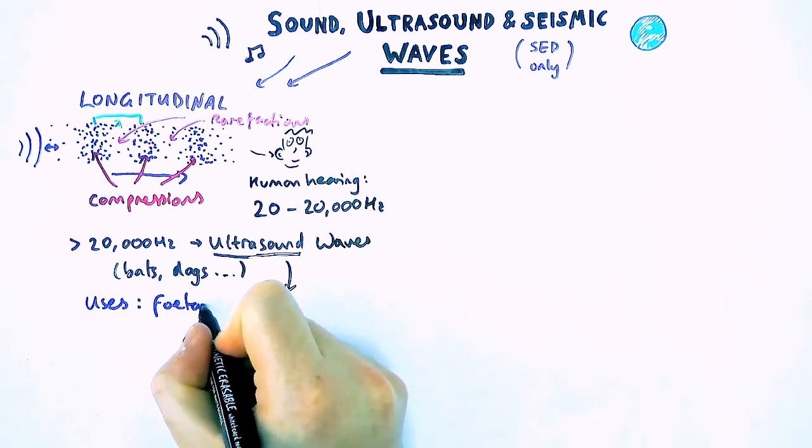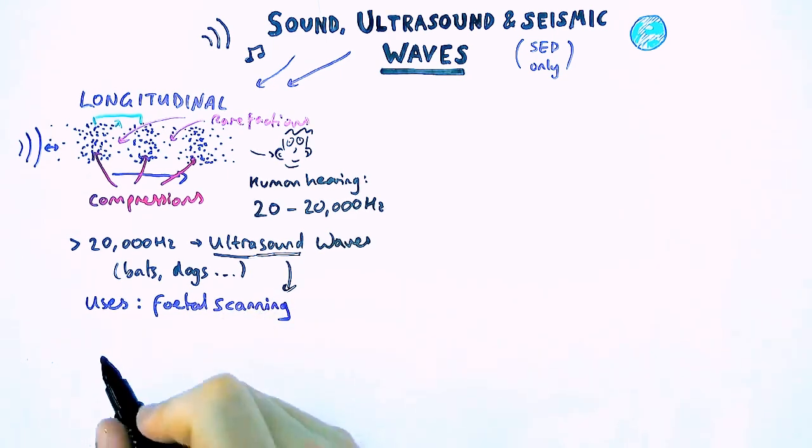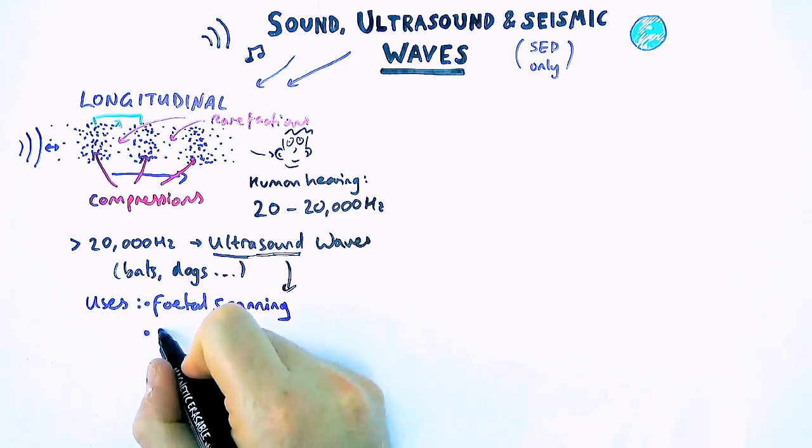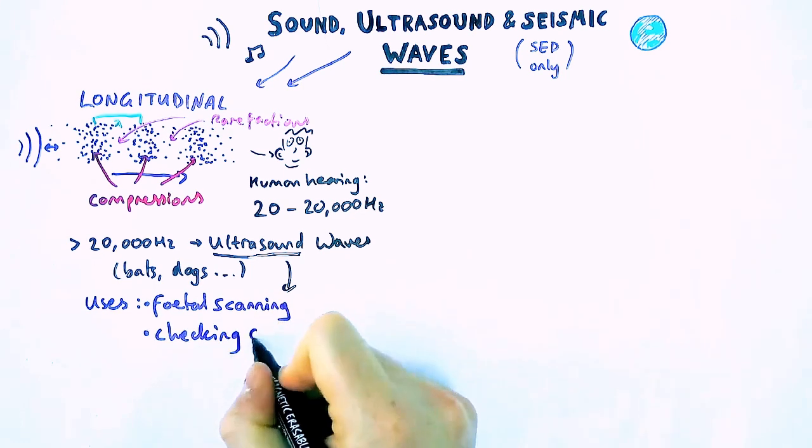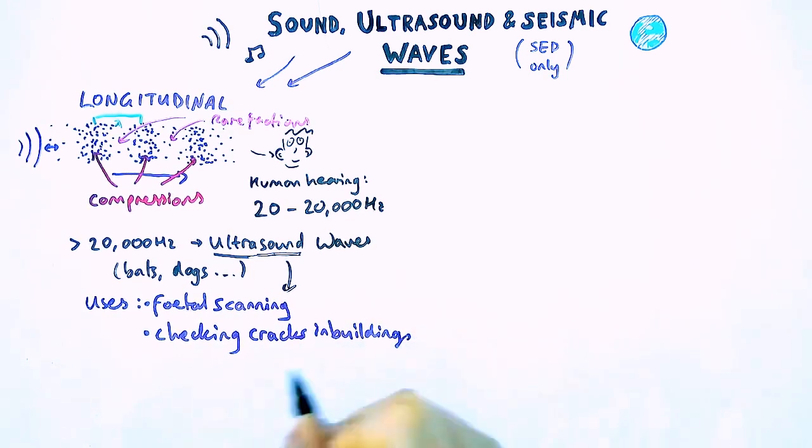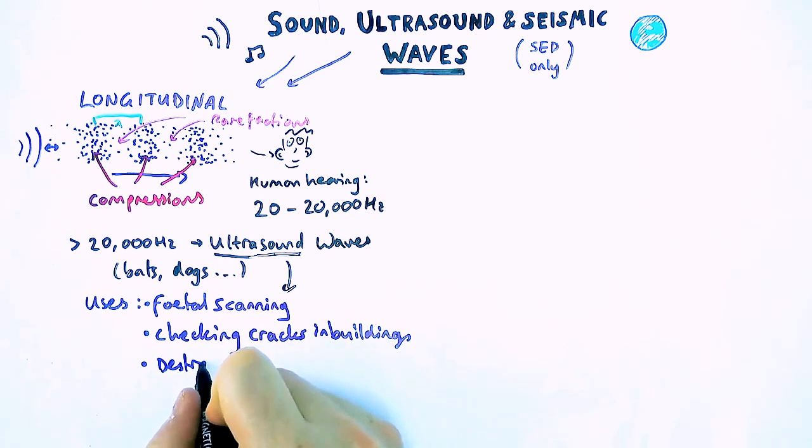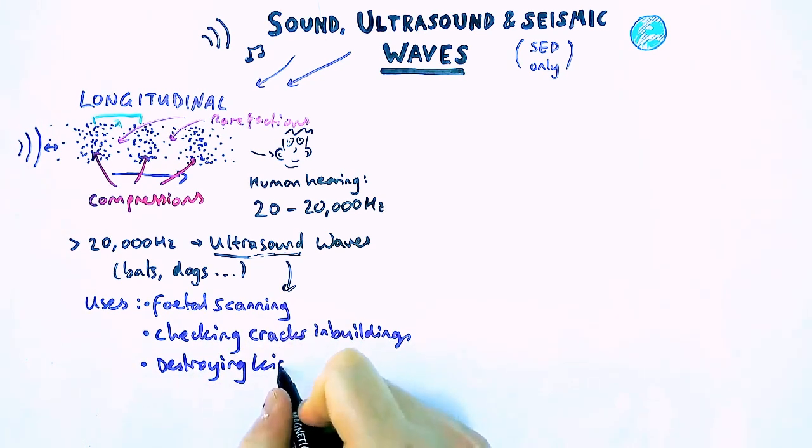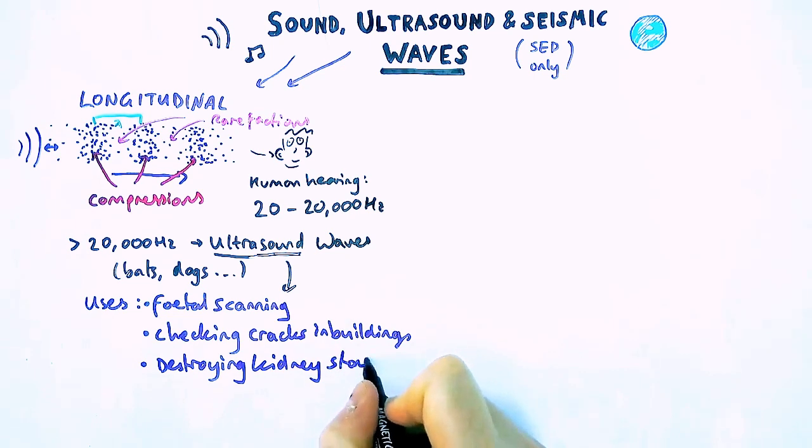One of them, the main ones you've probably heard of, which is to scan fetuses or fetal scanning. Not checking for babies, please make sure you're careful how you phrase it. As well as that, you can also check for cracks in buildings, in building materials. And you can actually use their destructive properties to have high amplitude ultrasound waves, can destroy kidney stones inside your body.